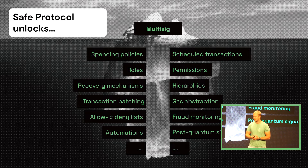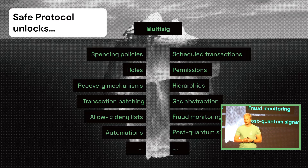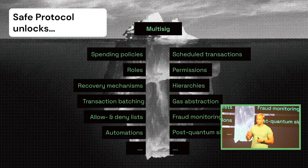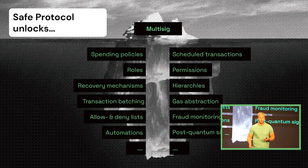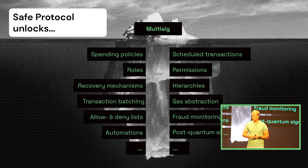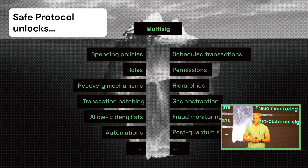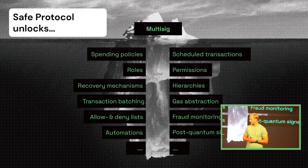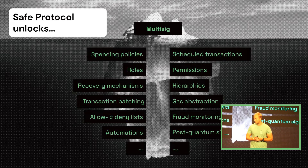You can run many different programs on a smart contract account, such as spending limits — maybe one key on your phone allows low-value transactions like below 100 DAI, and you don't need additional keys for that. But if the transaction involves higher-value assets, then you'd have to collect more signatures and access more of those keys. That enables you to combine accessibility with a more secure setup.